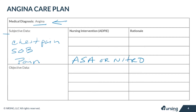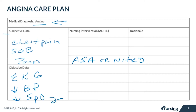Objective data will include EKG changes, hypotension, tachycardia, bradycardia, decreased SpO2, and finally signs of decreased perfusion like cool, clammy, pale skin.